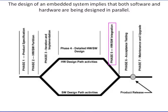Phase 5 is the integration of hardware and software components. The most crucial step in embedded system design is the integration of hardware and software. Two important concepts of integrating hardware and software are verification and validation, which are the final steps to ensure that a working system meets design requirements.